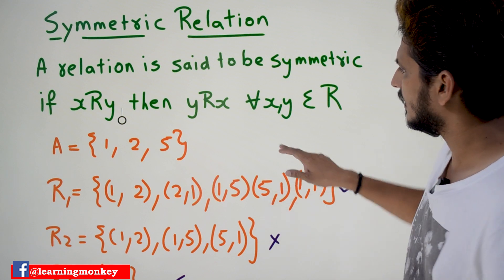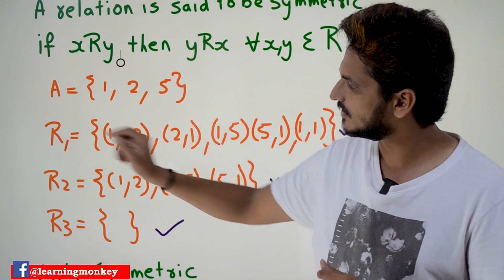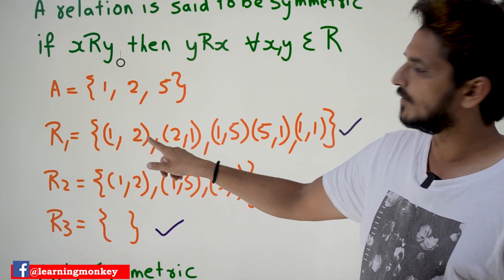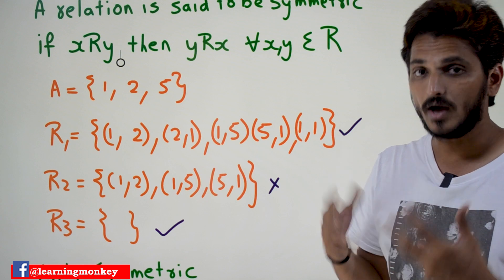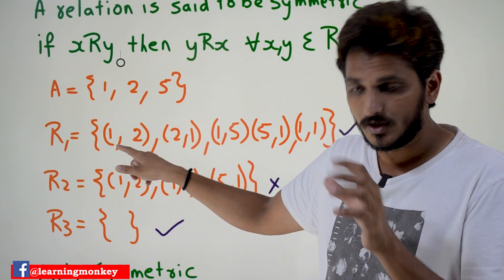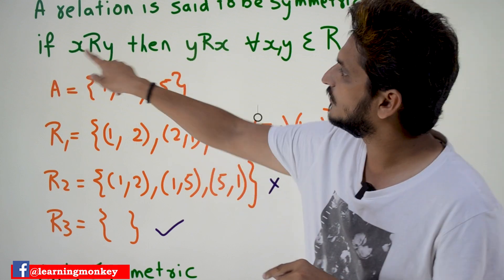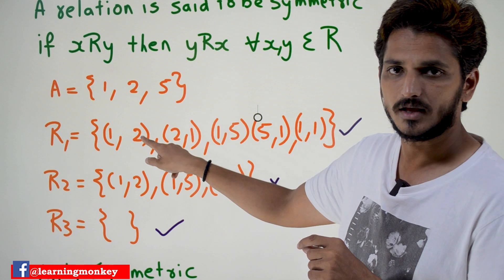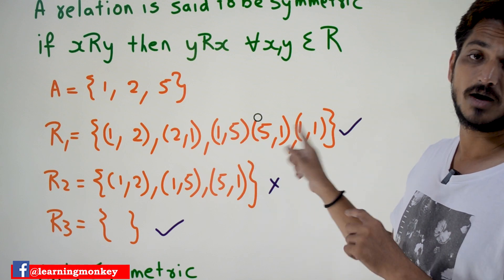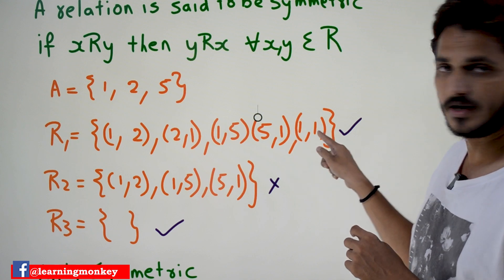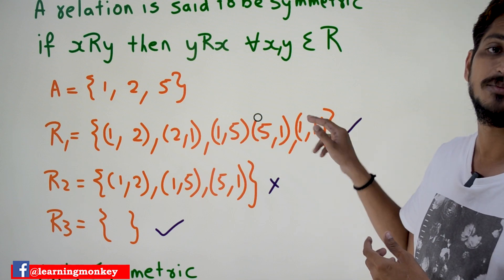With examples you are going to understand it better. Let's take a set A = {1, 2, 5}. On this set we have relation R1 = {(1,2), (2,1), (1,5), (5,1), (1,1)}. Is it a symmetric relation? Yes, it is a symmetric relation. For every (x, y) — take (1,2) — you should have (y, x) = (2,1). Similarly, (1,5) and (5,1) are there, and (1,1): x relates y, y relates x — yes. That's why it is a symmetric relation.